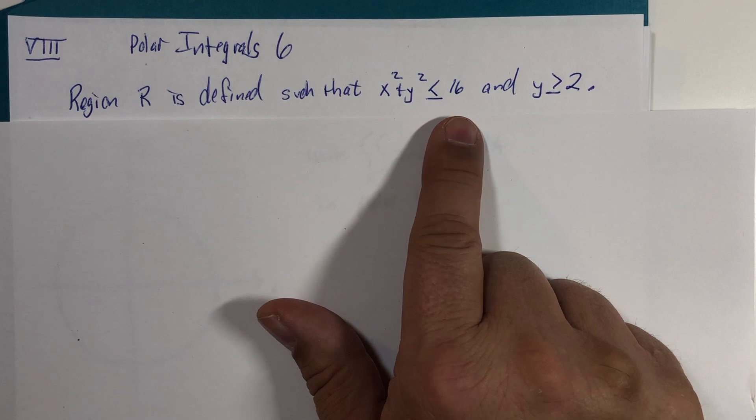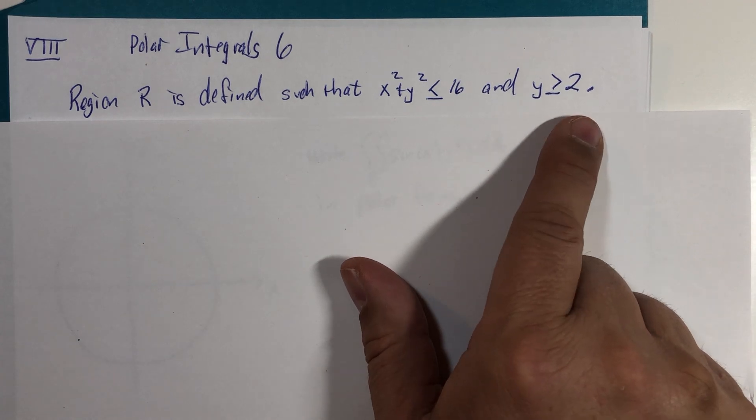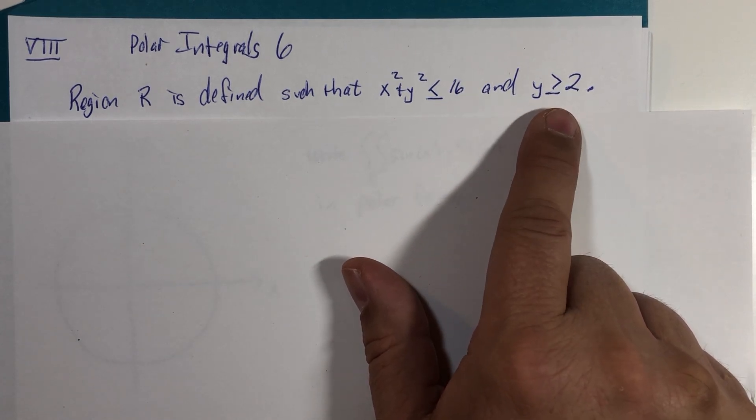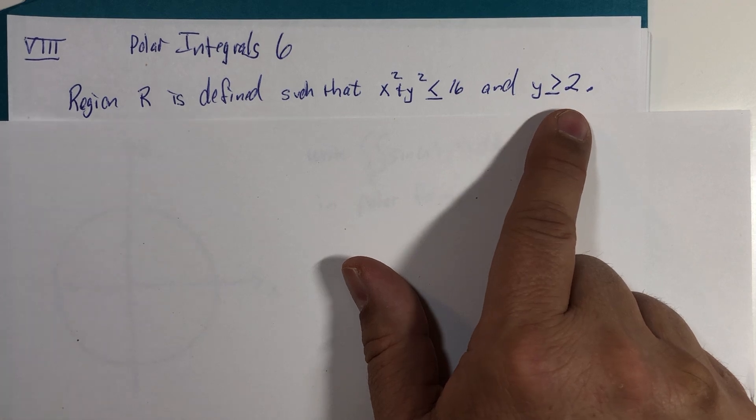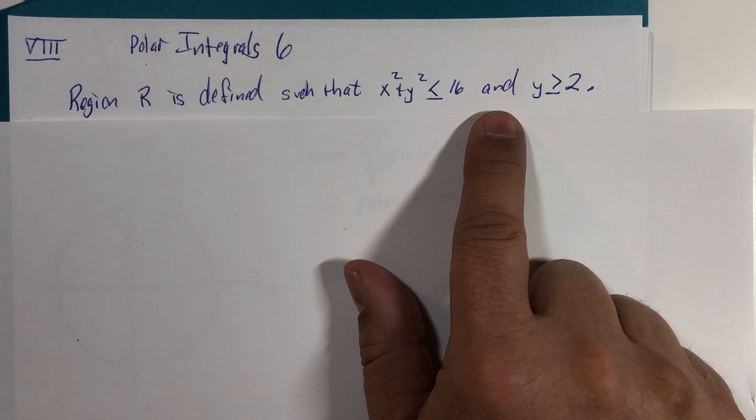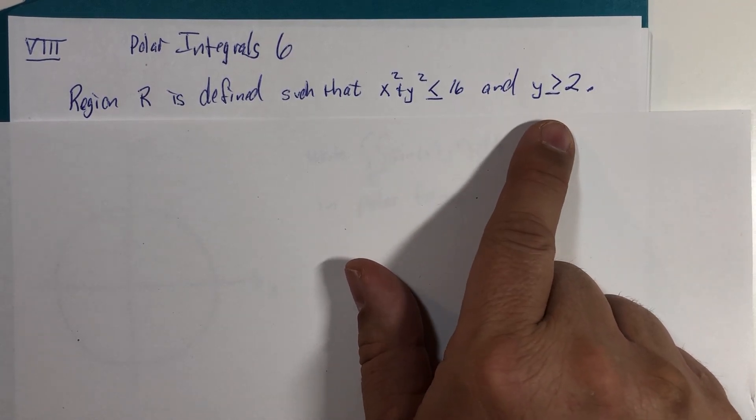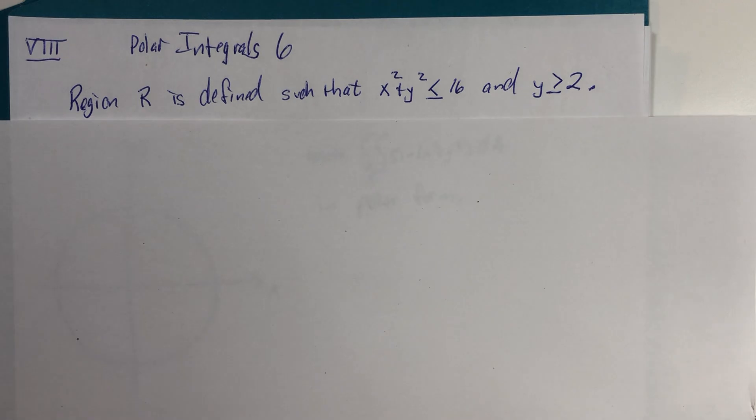4, that's correct. And y equals 2 is a horizontal line. Y is greater than or equal to 2 would be above that line, and the word 'and' implies that it's in the circle and must be above this line.